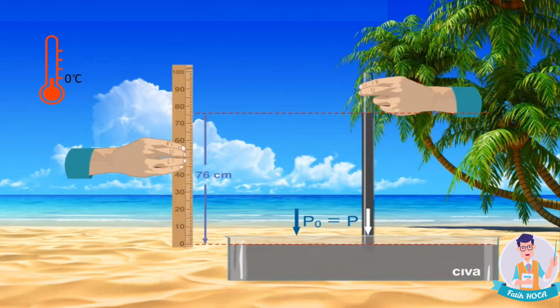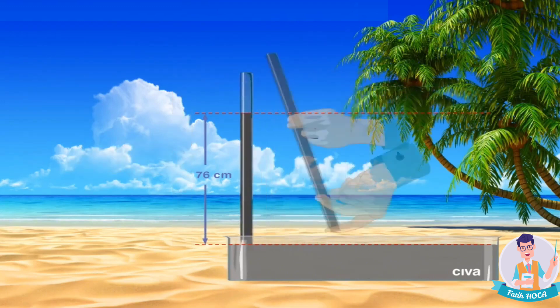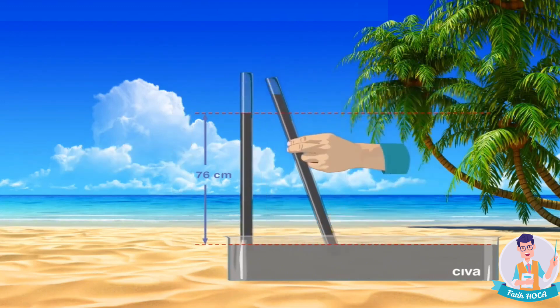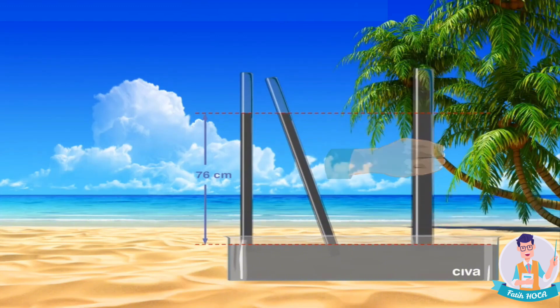When we repeat the same experiment by tilting the glass tube, the mercury level will still be 76 cm. Even if we repeat the experiment using a thicker or longer glass tube, the mercury level does not change.